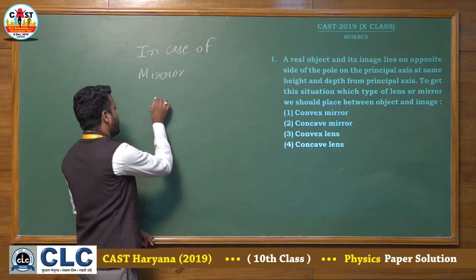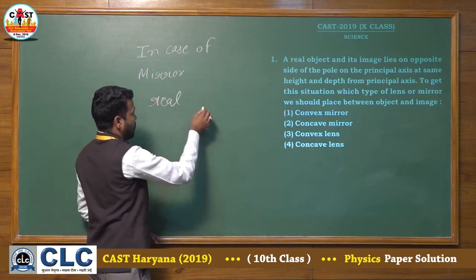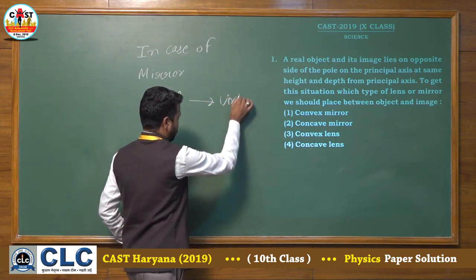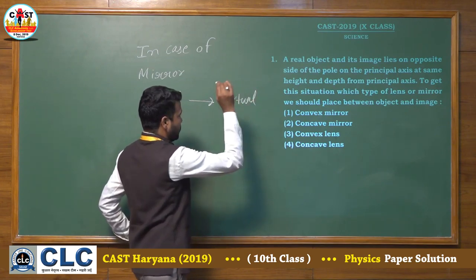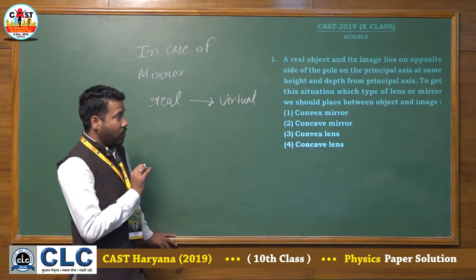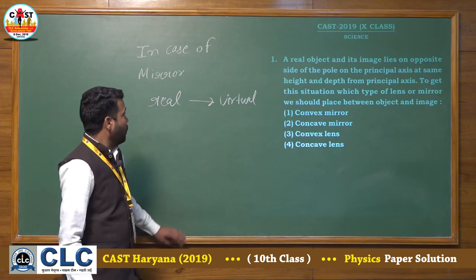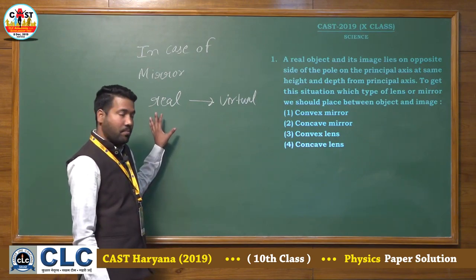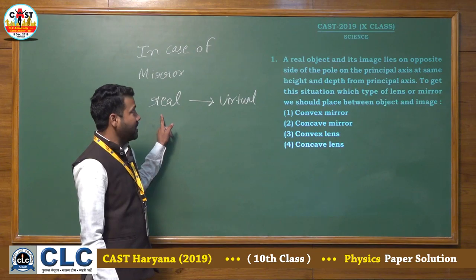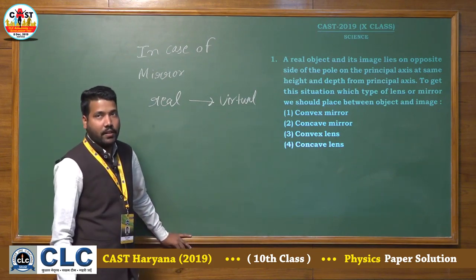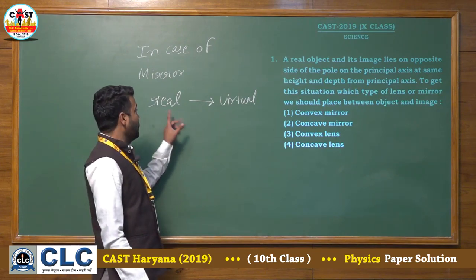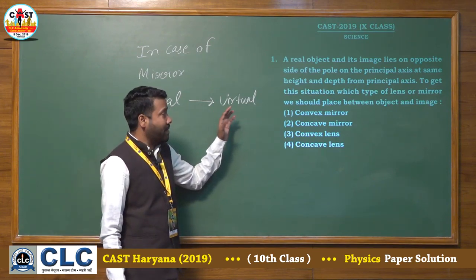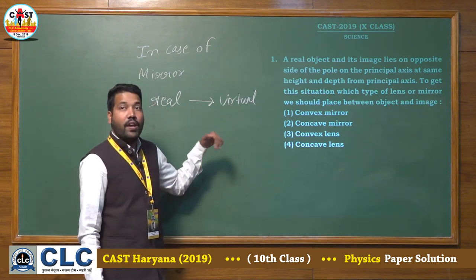Let's take the first case: if the object is real and its image is virtual. A concave mirror forms a real image of a real object, and also forms a virtual image of a real object. But when it forms a virtual image of a real object, that image is erect.